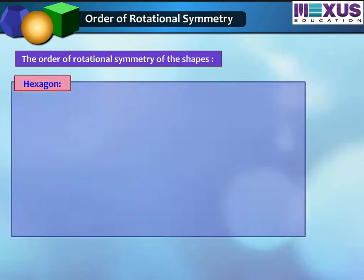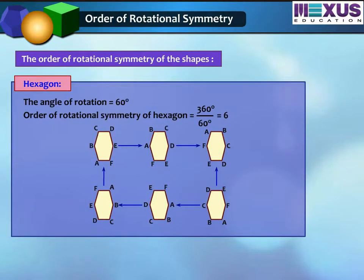Third, hexagon. The angle of rotation of a hexagon is 60 degrees. So, the order of rotational symmetry will be 360 degrees divided by 60 degrees, which equals 6.